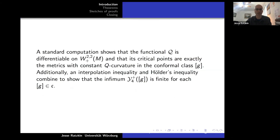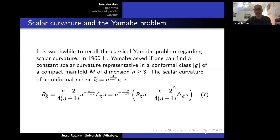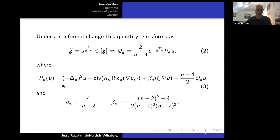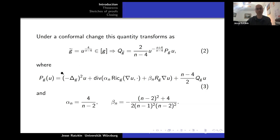Recalling these operators: the script L operator is essentially minus the Laplacian plus a potential. The operator P is the bi-Laplacian plus second order divergence terms plus a potential. The leading order term is the bi-Laplacian, followed by second order divergence terms and a potential term.